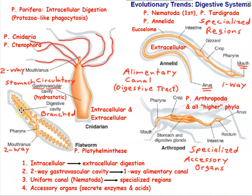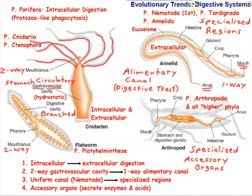On the phylogenetic tree, nematoda was the first phylum to have both a mouth at one end and an anus at the other — what we call an alimentary canal or digestive tract. That's the significance of nematoda being listed first here. Everything from nematodes on has an alimentary canal, with a mouth at one end and an anus at the other.